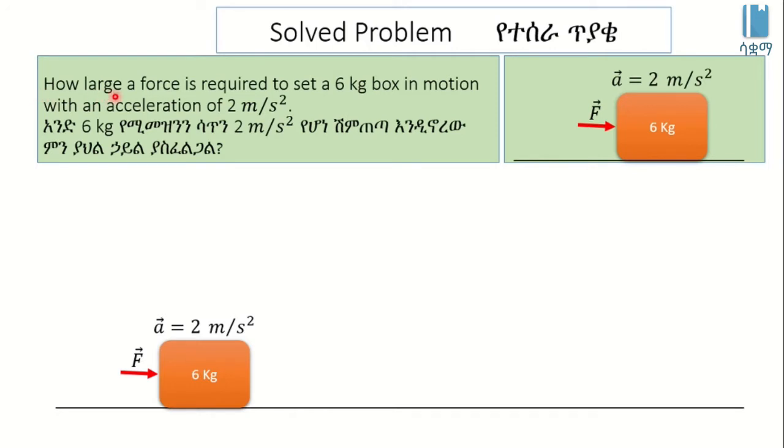How large a force is required to set a six kilogram box in motion with an acceleration of 2 meters per second squared?